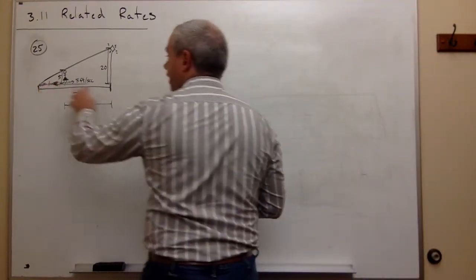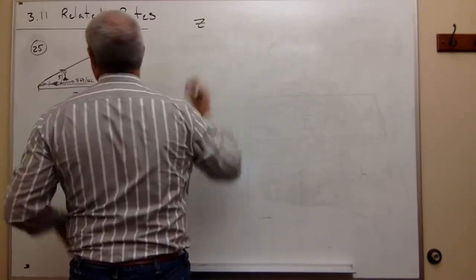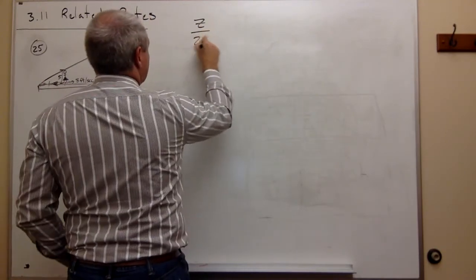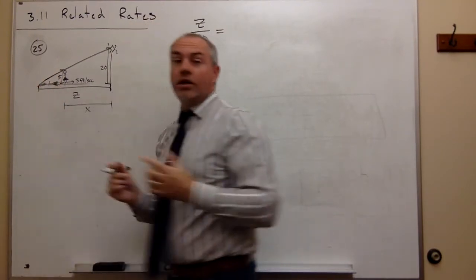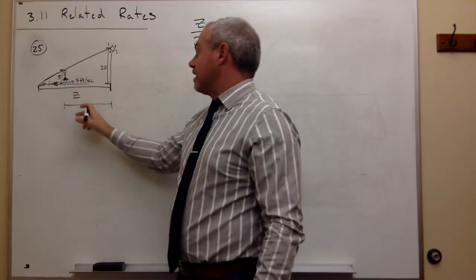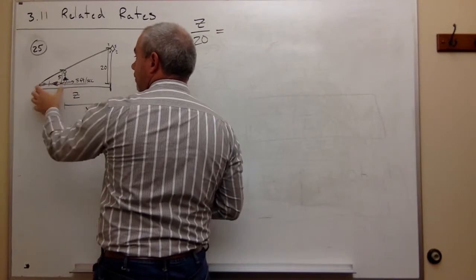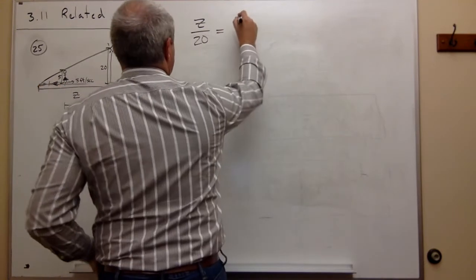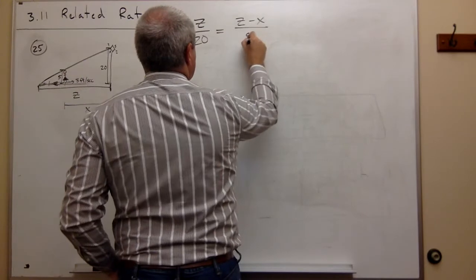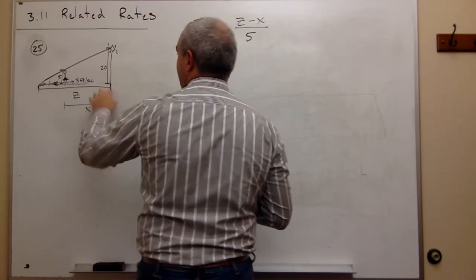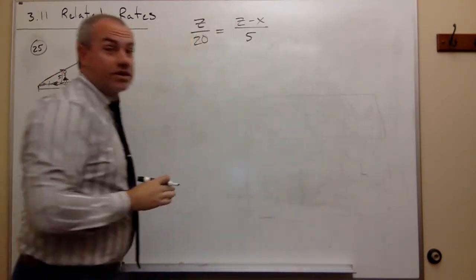We set up similar triangles again using x and z. The big triangle's ratio gives z divided by 20. For the small triangle, the base is not y anymore — with only z and x, that distance is z minus x. So z/20 equals (z − x)/5. That's our similar triangle equation: big side over big side equals little side over little side.